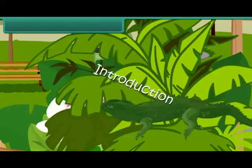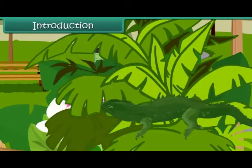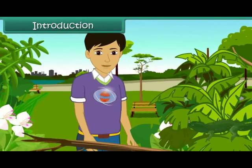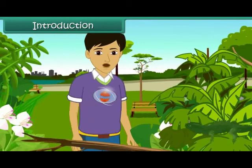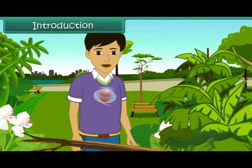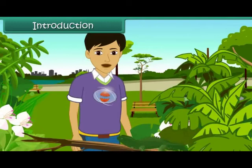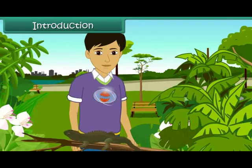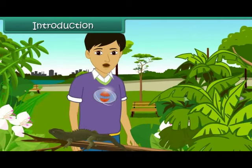A chameleon is in grass gardens. Can you see it? Yes, it is under the leaves. A chameleon changes its color according to its surroundings to escape its predators. It is quite essential that they adapt to their surroundings.